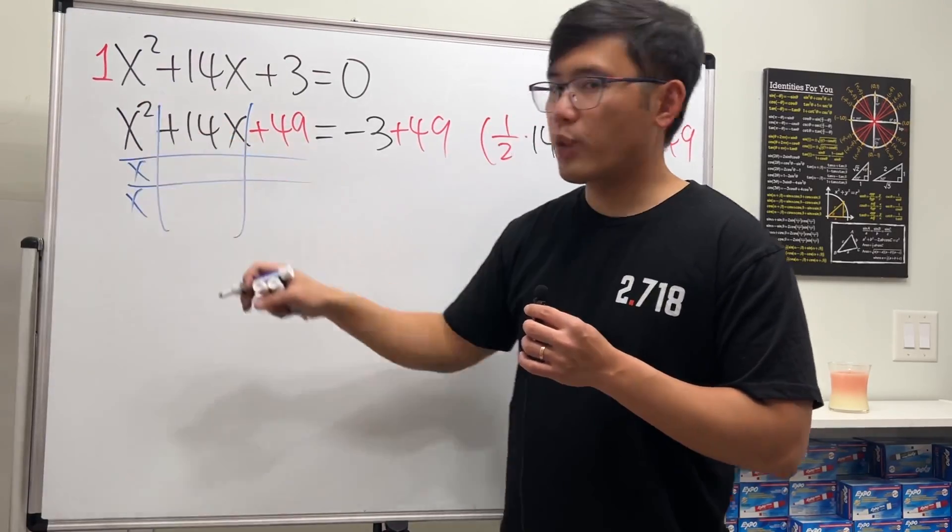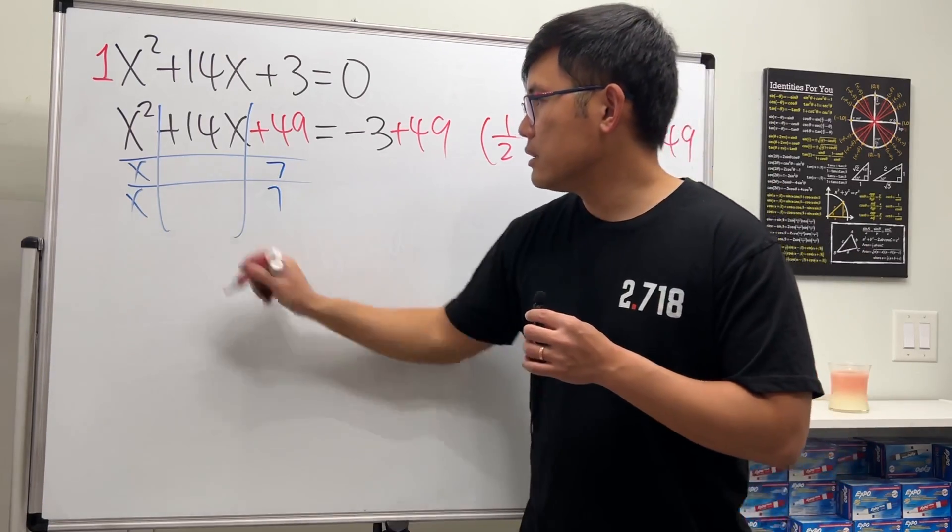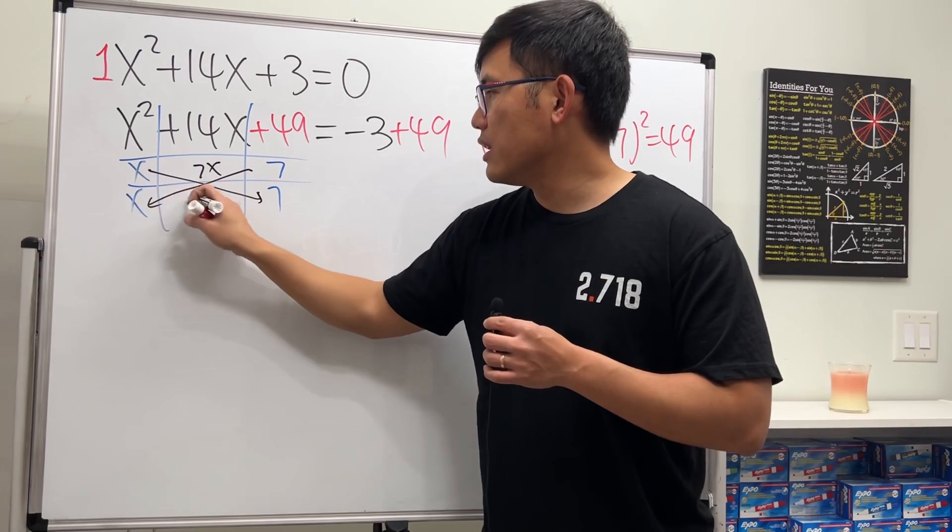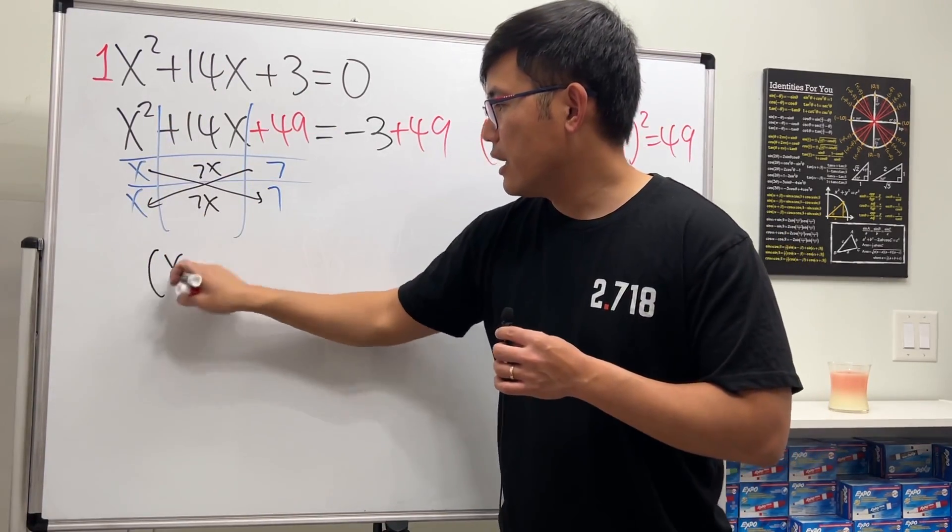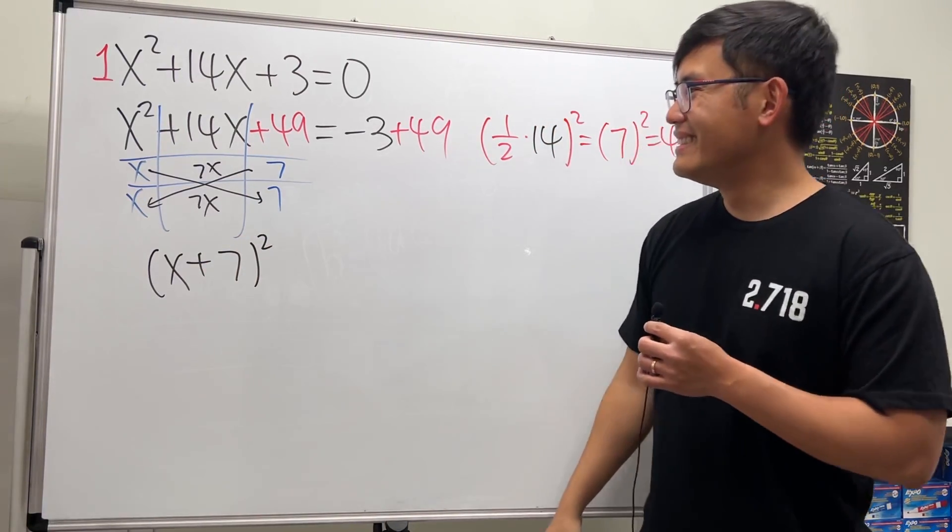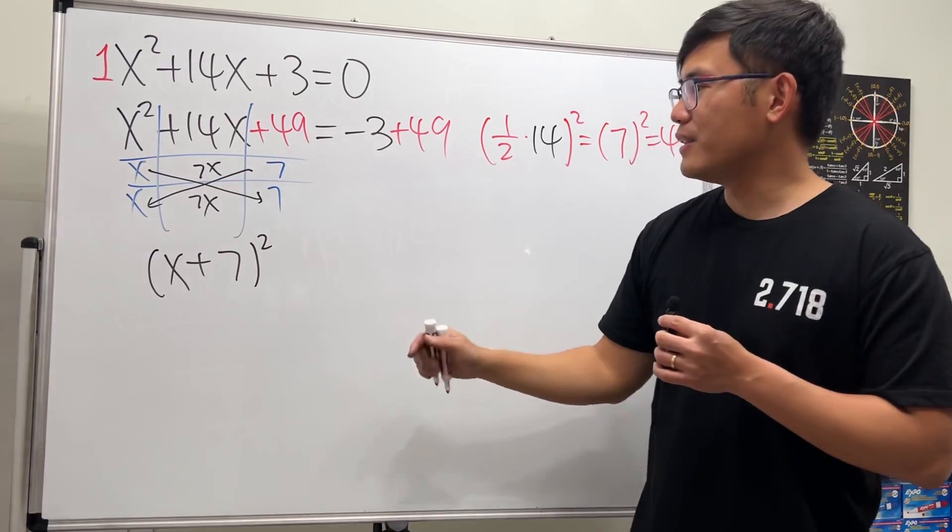If you factor it, you get x times x, which is x squared, and 49 is just 7 times 7. We see 7 times x is 7x, and this gives us another 7x. So this becomes (x + 7) squared. Of course, you can do that in your head if you're comfortable with factoring.